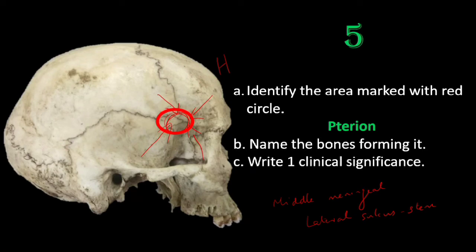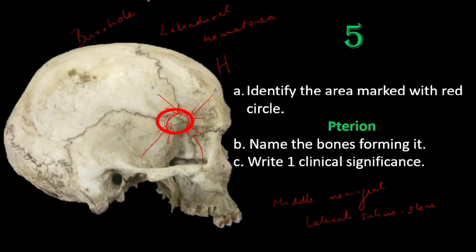The bone over the pterion is very thin, so even a small blow or fracture at this region can injure the middle meningeal vessels underneath and give rise to an extradural hematoma. This region is also used for burr hole surgeries in neurosurgery, where you drill this region and perform craniotomy or other surgeries. Extradural bleeding through this region can also be evacuated via this approach.